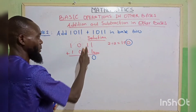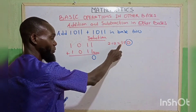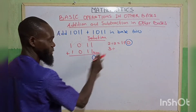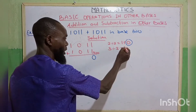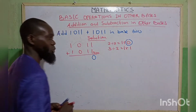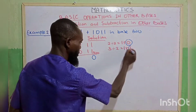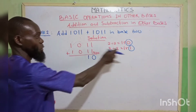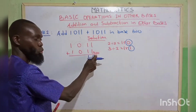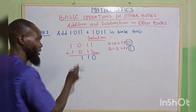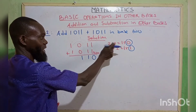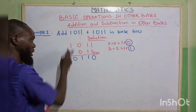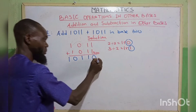Next column: 1 plus 1 is 2, plus the carried 1 gives 3. 3 divided by 2 gives 1, remainder 1. We write remainder 1 and carry 1. Then 0 plus 0 is 0, plus the carried 1 is 1. Since 1 is less than 2, we write 1 directly. Finally, 1 plus 1 gives 2. 2 divided by 2 gives 1, remainder 0. Write remainder 0 and carry 1. There are no more numbers, so we place the 1 in front. The answer is in base 2.